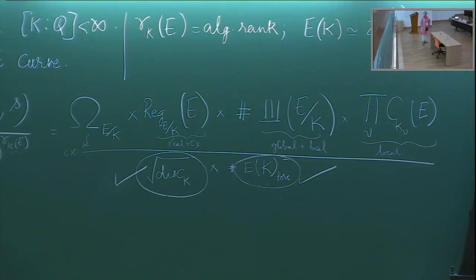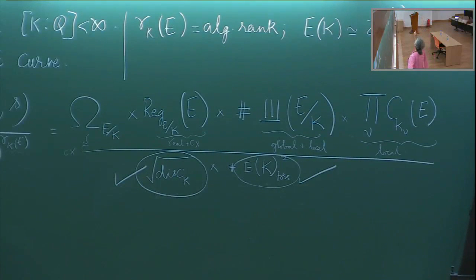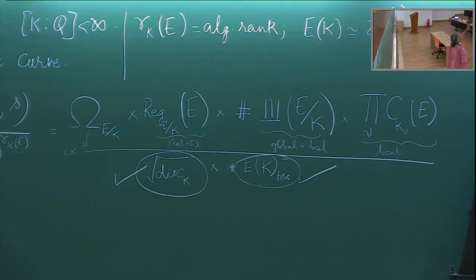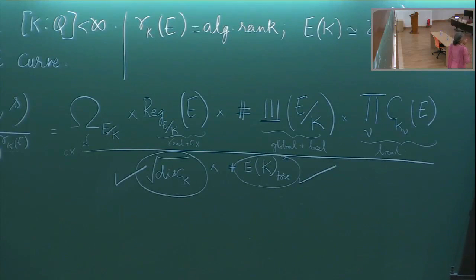Let me now go through the names of the terms. The first is called the period. These notes will be given to all of you — I can't do full justice in one hour. I'm just going to give you an indication of what these objects are and how deep they are. None of these things stare you in the face. That is what is remarkable about the Birch–Swinnerton-Dyer conjecture — you have to dig deep even to understand the terms.